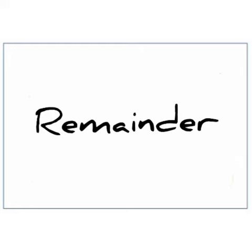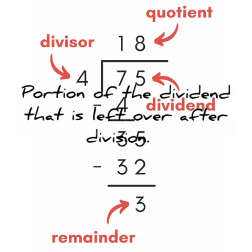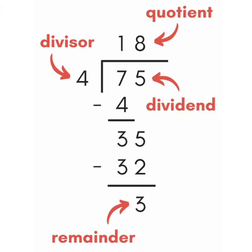What is remainder? The remainder is the portion of the dividend that is left over after division. For example, on dividing 75 by 4: 75 is the dividend, 4 is the divisor, 18 is the quotient, and 3 is the remainder.